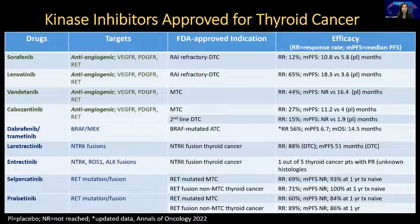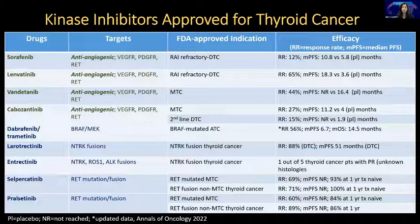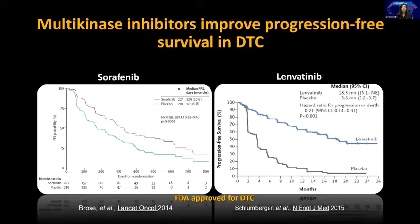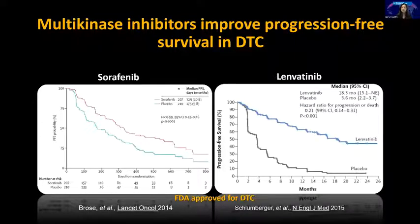The RET mutations we see in medullary and the RET fusions are seen in the follicular-derived thyroid cancers — mostly papillary and then in some poorly differentiated and ATC patients. Multi-kinase inhibitors have been in use for many years now in thyroid.